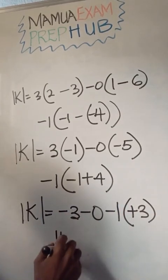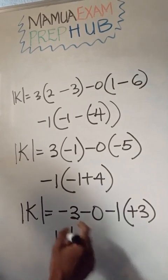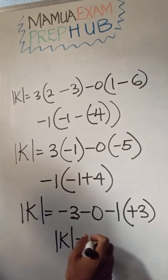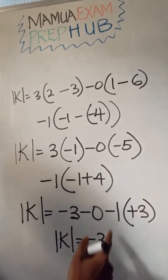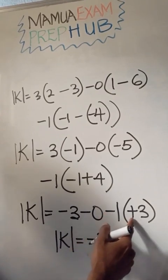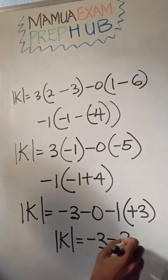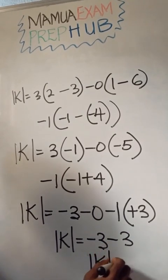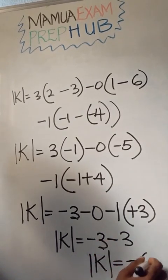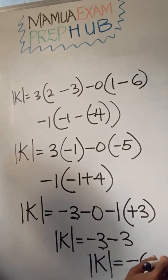So simplifying this further, I have the determinant K which is equal to: minus 3 minus 0 is minus 3, minus 1 times plus 3 is minus 3. So our final determinant, our answer, is minus 6. So that is your answer.